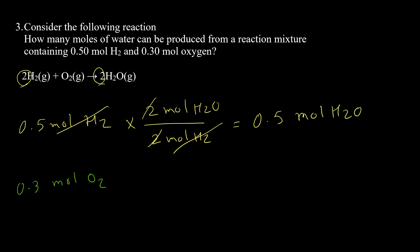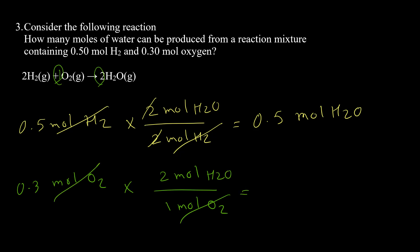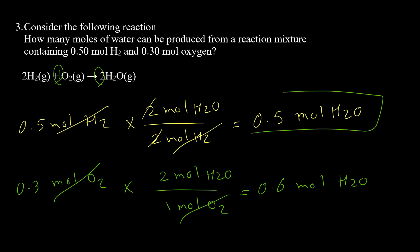Using oxygen: 1 mol O₂ produces 2 mol H₂O, so 0.30 mol O₂ gives 0.6 mol water. We have two answers: 0.5 mol and 0.6 mol. The lower answer, 0.5 mol, is the actual answer. This also confirms that hydrogen is the limiting reactant, because the actual answer came from the hydrogen calculation, not the oxygen calculation.